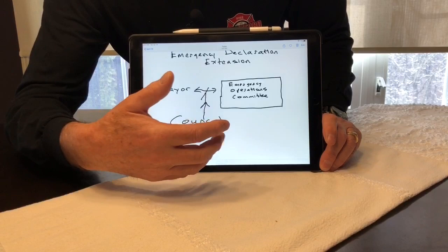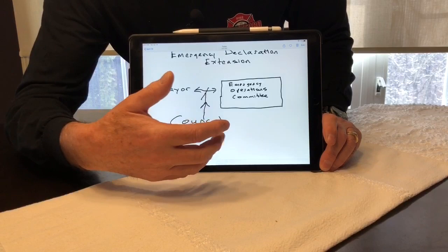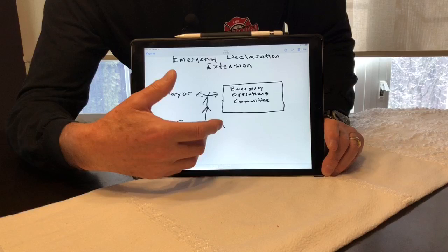So I'll use one of my handy graphs. So this is under an emergency declaration. We have the emergency operation committee in place and those are all the general managers of the city, the city CAO, the police chief, the fire chief, the executive director of the hospital, the medical officer of health, all the leaders of important institutions in our community.